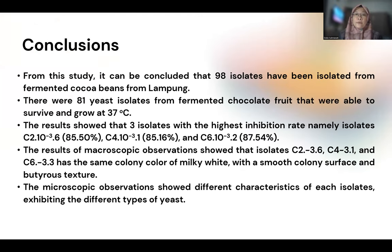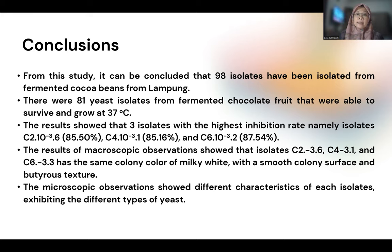In conclusion, in this study we found that 98 isolates were isolated from fermented cocoa beans from Lampung. These yeasts have potential antagonistic activity to inhibit the dangerous Aspergillus flavus, which can produce aflatoxin. Among these, the yeast can show morphological diversity — colonies are very differentiated from one another. This research demonstrates the diversity of yeast from fermented cocoa beans.